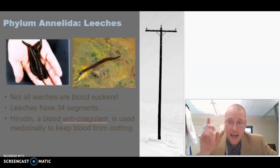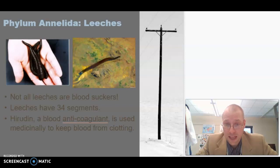Here are your leeches. Not all leeches are bloodsuckers. All leeches have 34 body segments. And there is a medicinal substance called hirudin, which is an anticoagulant. It stops your blood from clotting, and it is harvested from leeches. Now, however, I think they can make it in labs as well, but traditionally, the source was leeches.